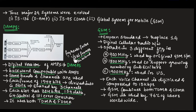DAMPS uses a frequency reuse factor of 1 by 7 at 25 frames per second. Each frame is 1944 bits, and each frame is divided into 6 slots shared by 3 channels. Each slot has 324 bits, and those 324 bits consist of 159 bits of data, 64 bits of control, and 101 error correction bits.